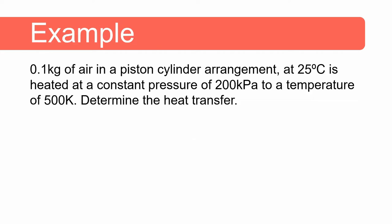Now let's do an example. 0.1 kilogram of air in a piston-cylinder arrangement at 25 degrees Celsius is heated at a constant pressure of 200 kilopascal to a temperature of 500 Kelvin. We need to determine the heat transfer, using the equation from the previous slide.